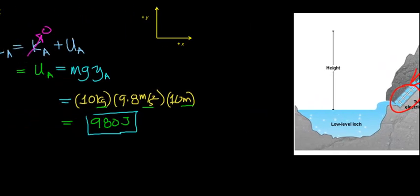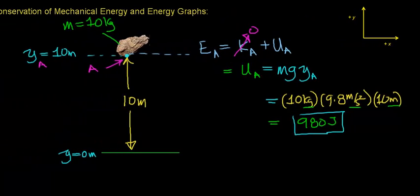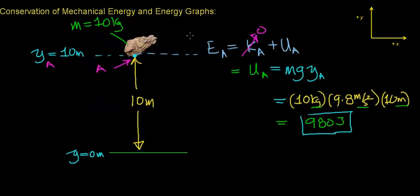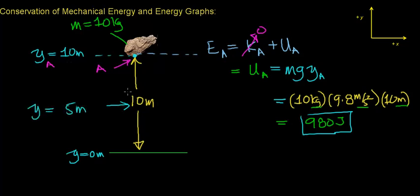Going back to the problem we started with: this rock has 980 joules of energy due to its position above the Earth's surface. Now we want to find out what the velocity of this rock is when it falls half of the distance. Half of 10 meters would be 5 meters. So we want to find the velocity of this rock after it falls 5 meters, and I'm going to label this point as point B.